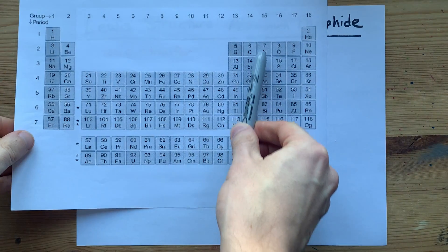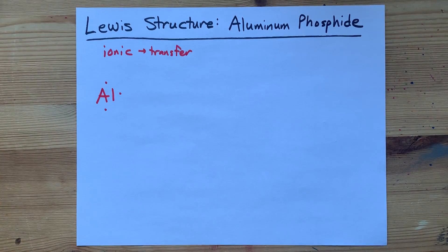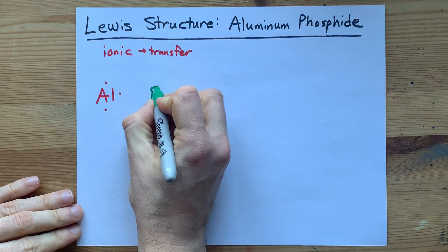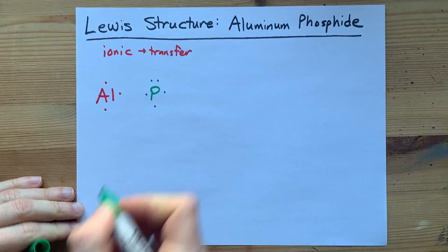Phosphorus, here in group 15, brings five valence electrons with it: one, two, three, four, five.